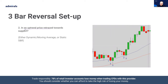Step two: in an uptrend, price retraces towards support. That support can be either dynamic — in terms of the moving averages, the 20 or the 50, which I particularly like — or it may be static, such as a horizontal level of support and resistance, a trend line, or a big round number. All of those are valid. Personally, I prefer to see it bounce off dynamic support — effectively a moving average, either the 20 or the 50. It's where we see it set up that defines the highest probability of it being a successful setup.